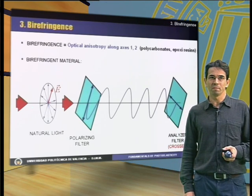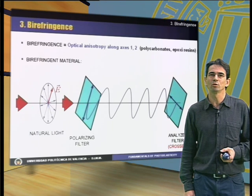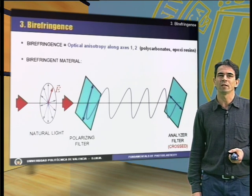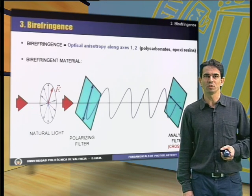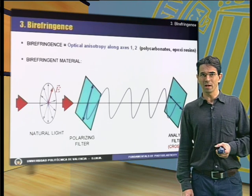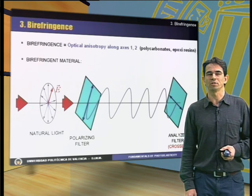The birefringence phenomenon. Most of the transparent materials do not modify the ray of light that goes through them, since they are isotropic materials. The light can go through the filters in all directions.